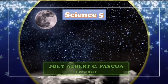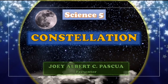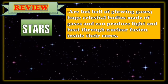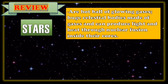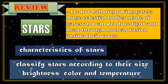For today's lesson, we're going to talk about the constellation. In your previous lesson, you've learned about the stars. The stars are hot balls of glowing gases, huge celestial bodies made of gases, and can produce light and heat through nuclear fusion inside their cores. You have also learned the characteristics of stars and classify stars according to their size, brightness, color, and temperature.